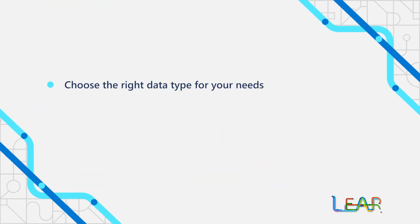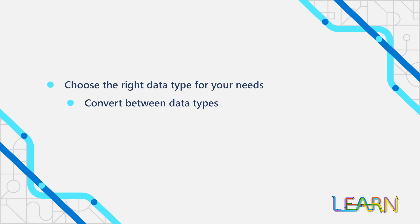In these modules, we expand on what you already learned whenever you took your first steps with C-Sharp. We'll learn new data types and how to choose the right data type for your given need. We'll learn how to convert one data type into another data type, and how to handle situations when those conversions aren't easy or not possible. And we'll learn how to manipulate string data — we'll format it, we'll concatenate it, and a lot more.